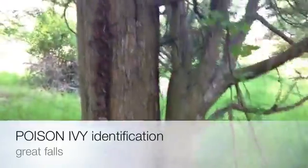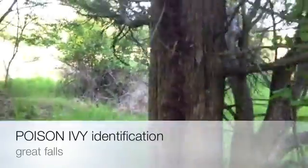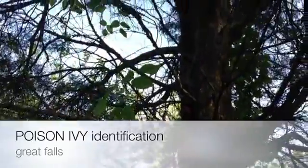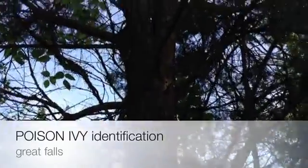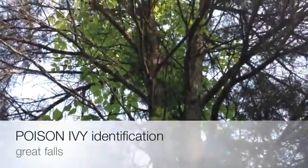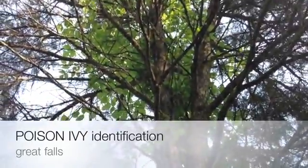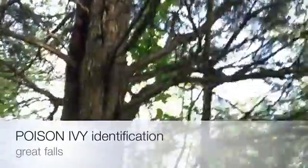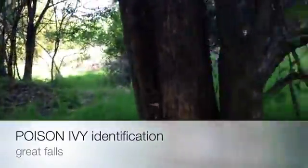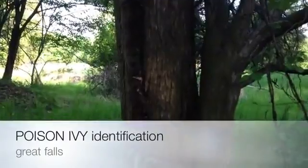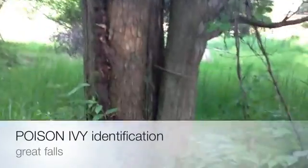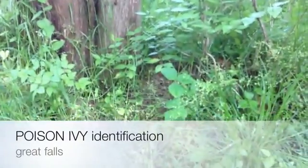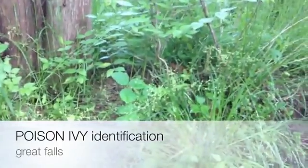Poison ivy — often you can see in this tree all these green leaves all up inside; this tree is actually poison ivy. And if you see this hairy root growing on a tree, you want to look down around the bottom because you'll usually find a few sprigs.